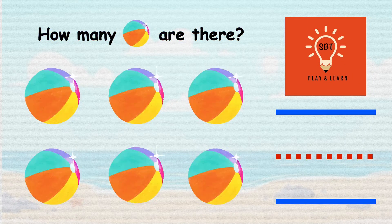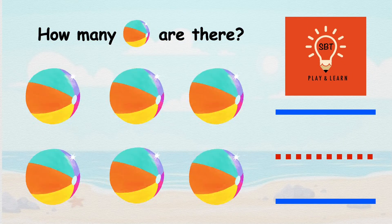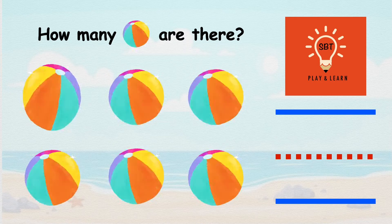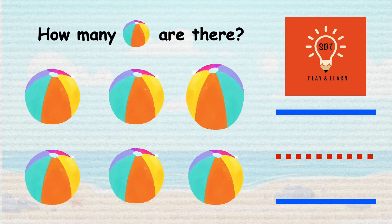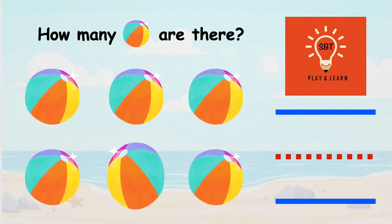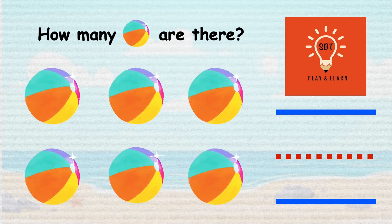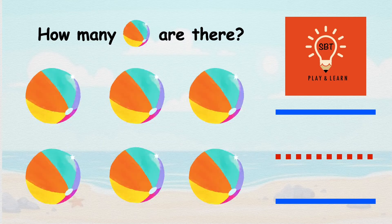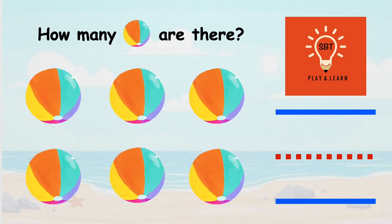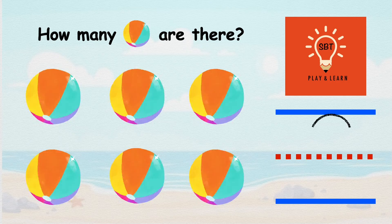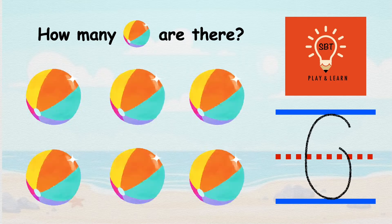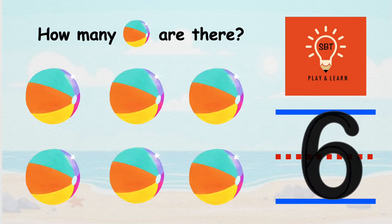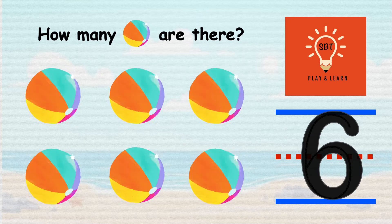How many beach balls are there? Ready? Count! 1, 2, 3, 4, 5, 6. There are 6 beach balls. Let's write number 6. Make a C and curl it up — Number 6.